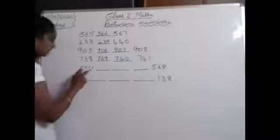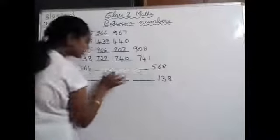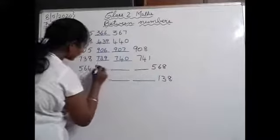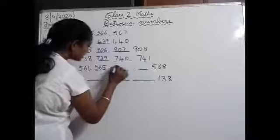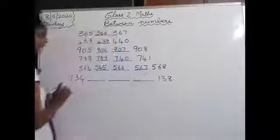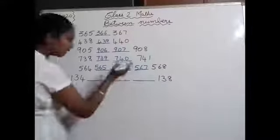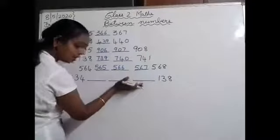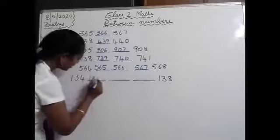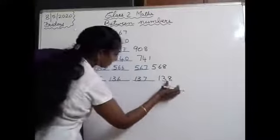Next: 564 blank blank blank 568. Three blanks are there, so we have to fill three numbers. After 564: 565, next 566, then 567, then 568. Next: 134 blank blank blank 138. Same way — 134, then 135, next 136, next 137, then 138.